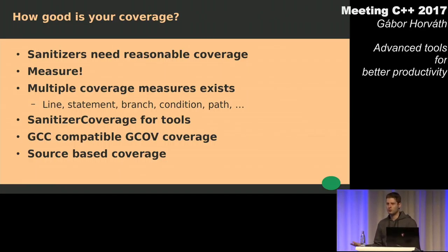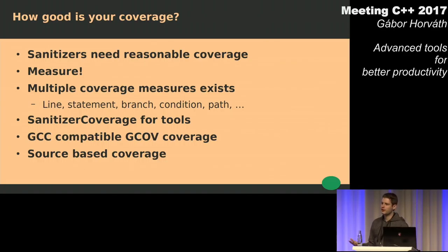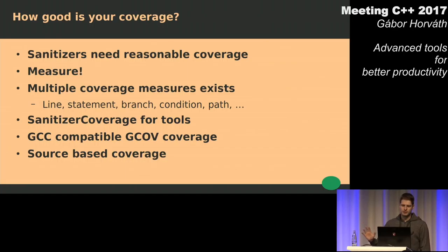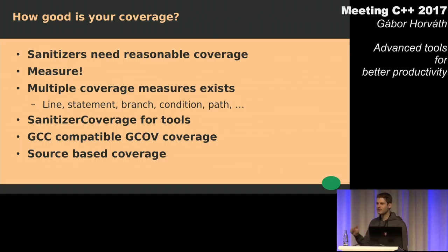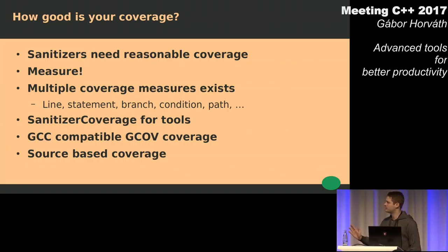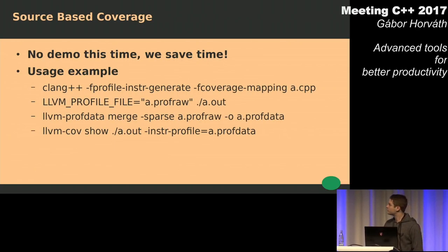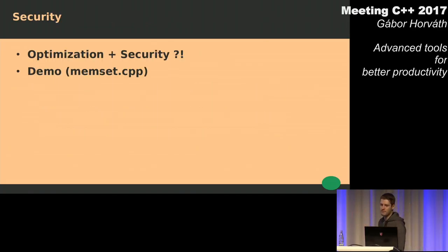I'm not telling you that coverage is everything, because I think there are sometimes functions that do not need to be covered with tests — for example, a getter or a setter. But of course, some people would disagree. There are some great tools to measure coverage and I think you should do that. Sometimes we write performance critical applications, sometimes security critical applications, and optimizations can hurt us there as well.